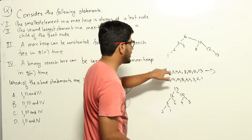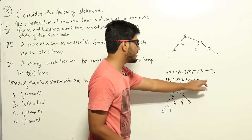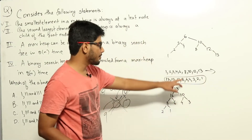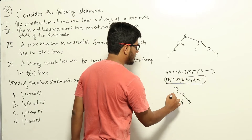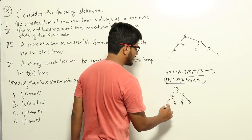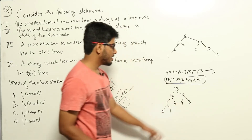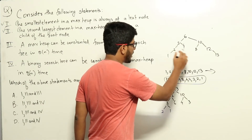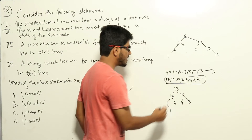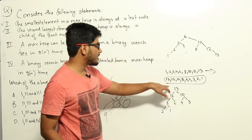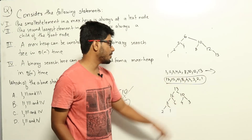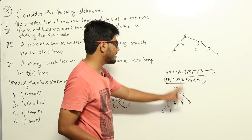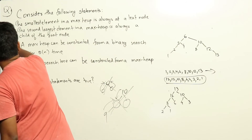...4, 3, 2, 1. From the binary search tree we reached here in theta(n) time, and reversing to descending order also takes theta(n) time, so the total is theta(n). If we put that in array form, this is nothing but a max heap — 13 at root, 12 and 10 as children, 12's children are 8 and 6, and so on. So from a binary search tree in theta(n) time we have constructed a max heap. Statement 3 is correct.